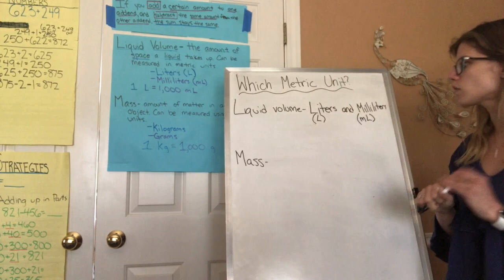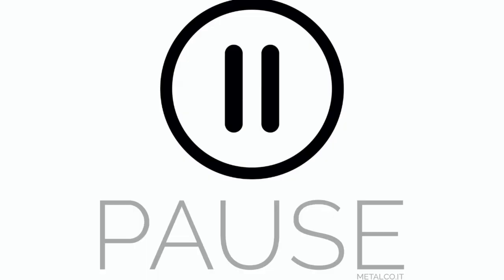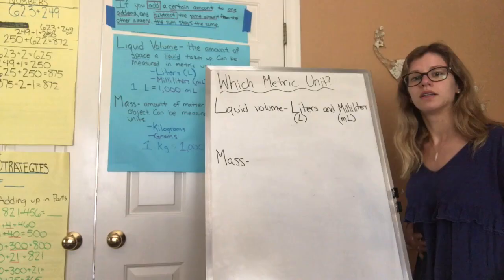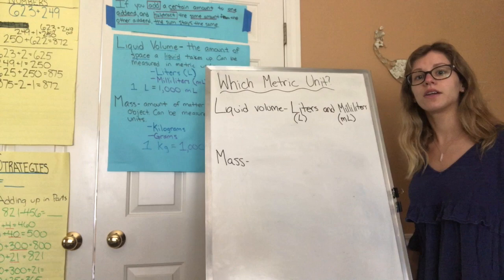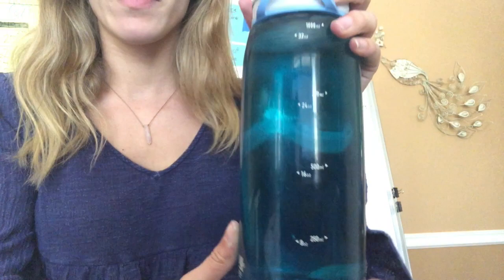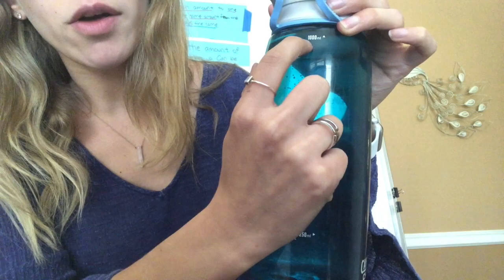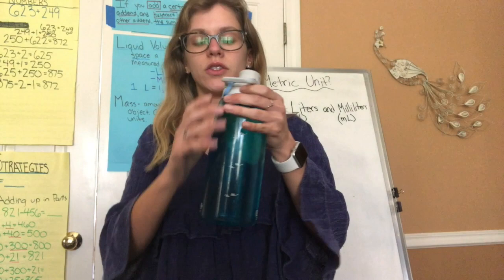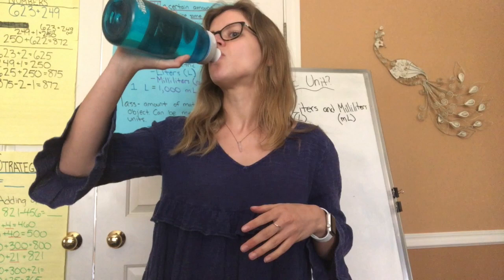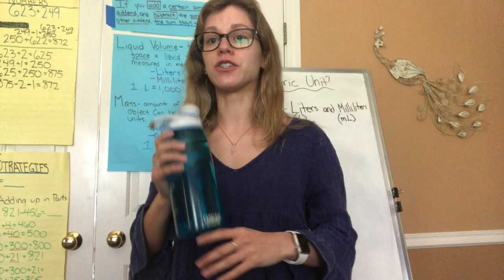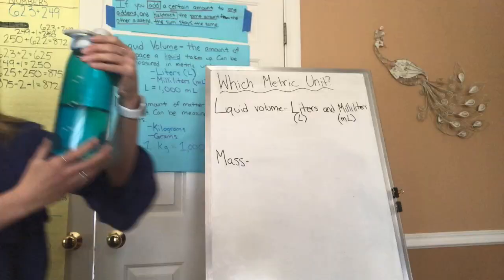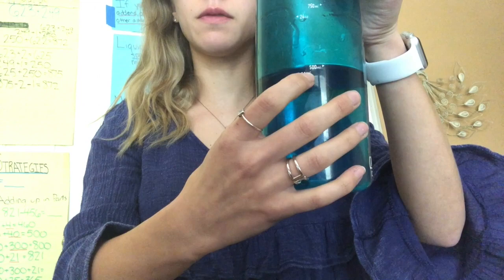A liter's abbreviation is L and milliliter's abbreviation is mL. Which unit is bigger — liters or milliliters? Liters is the bigger unit. If you look at my water bottle, there are one thousand milliliters in this bottle. One thousand milliliters equals one liter, so this water bottle is one liter or one thousand milliliters. I'm going to pour some out — now my water bottle is about 500 milliliters, or half of a liter.